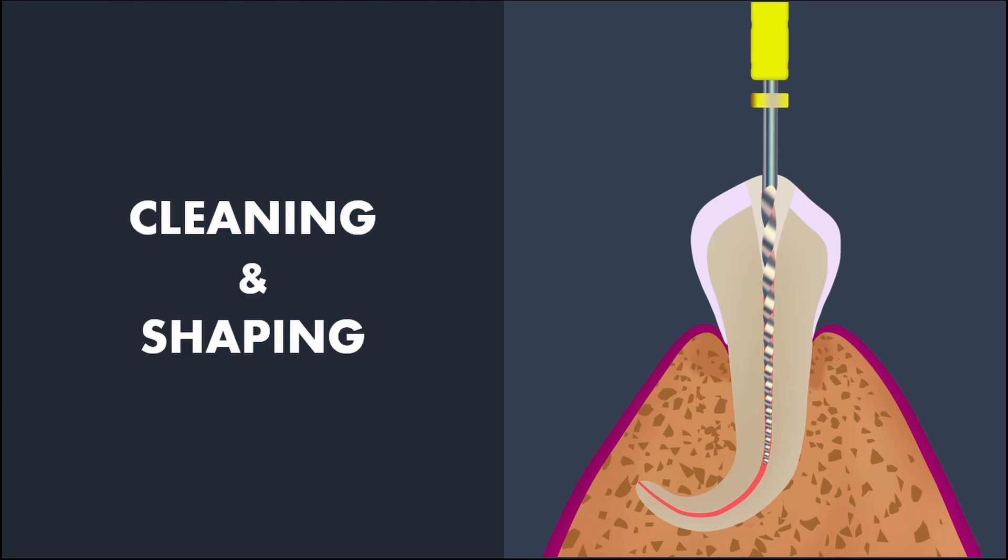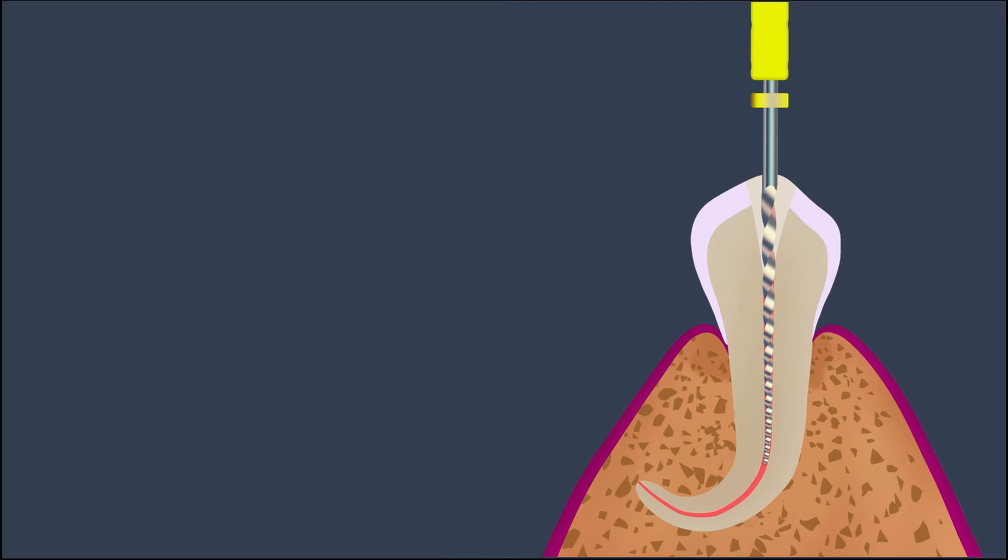It is a well-known fact that adequate enlargement of the apical portion of the root canal is essential for successful endodontic treatment. A preparation of apical size 45 at one millimeter short of the apex is well accepted as the ideal size for apical enlargement in posterior teeth.